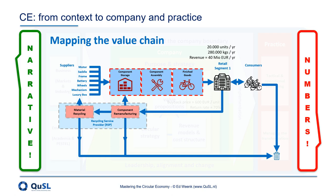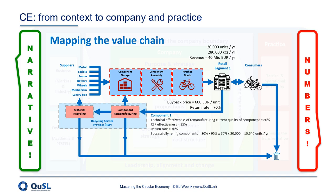For example, by adding the buyback price as an incentive for customers to return the product, plus an estimated percentage of returns to be expected. This would then provide the basis to evaluate the impact on each of the components to be remanufactured, by adding information about the technical effectiveness of remanufacturing based on the current quality of components, plus the effectiveness of the chosen RSP. Adding this to the expected return rate would then give an estimated quantity of components that can be successfully remanufactured, which would then provide a workable basis for building a business case by bringing in information about the total cost of remanufacturing versus the purchase of new components.